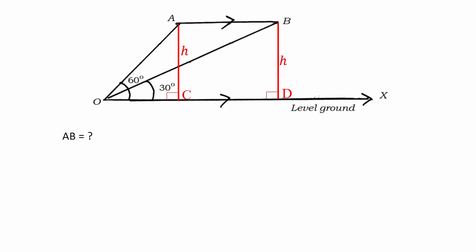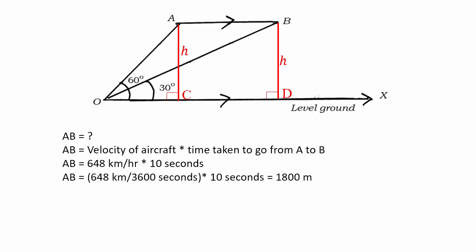What is A, B? We have to first find A, B. How do you find A, B? A, B is given by velocity of the aircraft and the time taken to go from A to B. It took 10 seconds to go from A to B. If you multiply that you get 1800 meters.